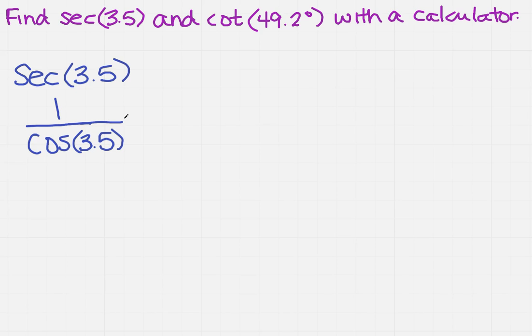So when you do that, remember this one does not have a degree sign, so make sure that you're in radians. If you have a traditional scientific calculator, you'll put in the 3.5, press cosine, and then push the 1 over x button. You should get approximately negative 1.0679.